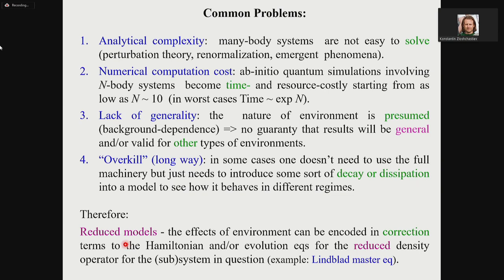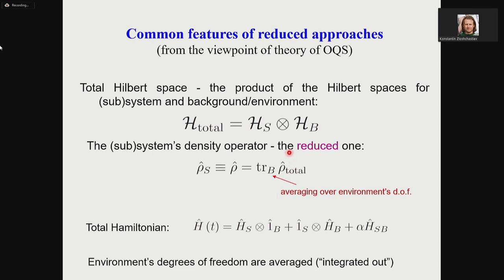Therefore, reduced models where effects of environment can be encoded in correction terms to the Hamiltonian and/or evolution equations for the reduced density operator are very popular. An example would be Lindblad master equations. Common features: your total Hilbert space is a product of Hilbert space for your subsystem and your environment. You introduce the average of the density operator over environment degrees of freedom, and that's where you arrive at the reduced density operator. Your total Hamiltonian splits into two parts, and you're most interested in your subsystem Hamiltonian.